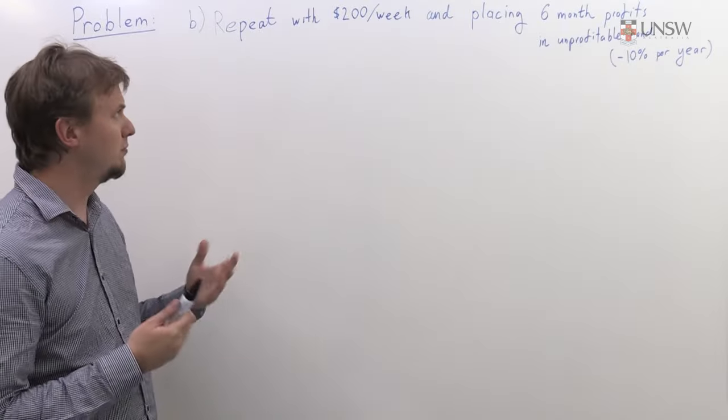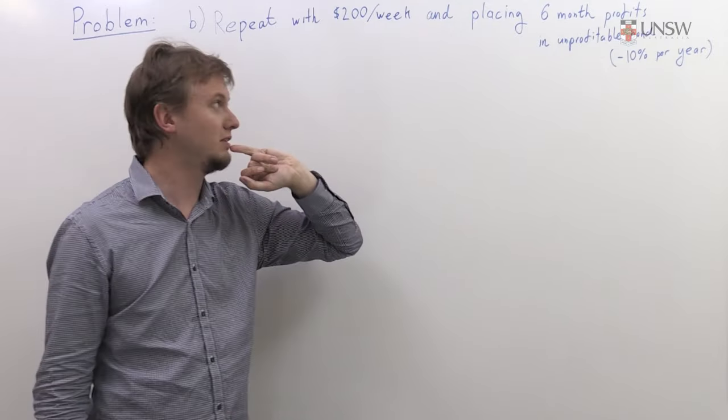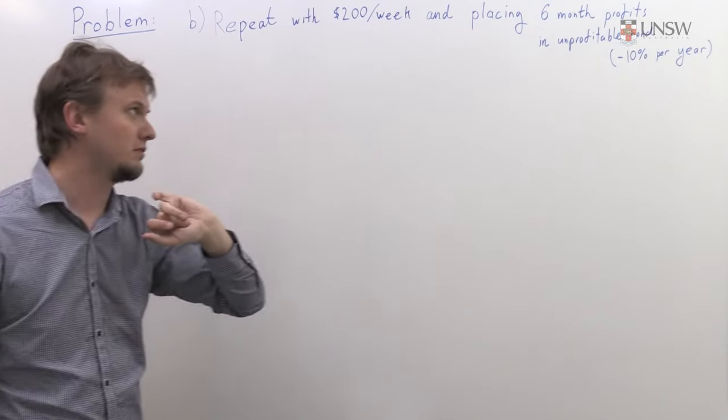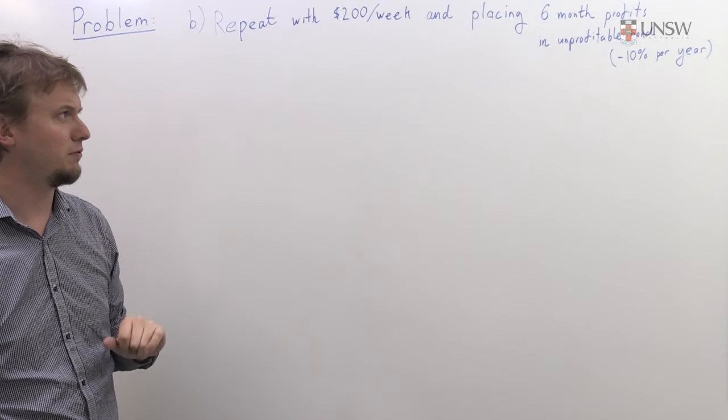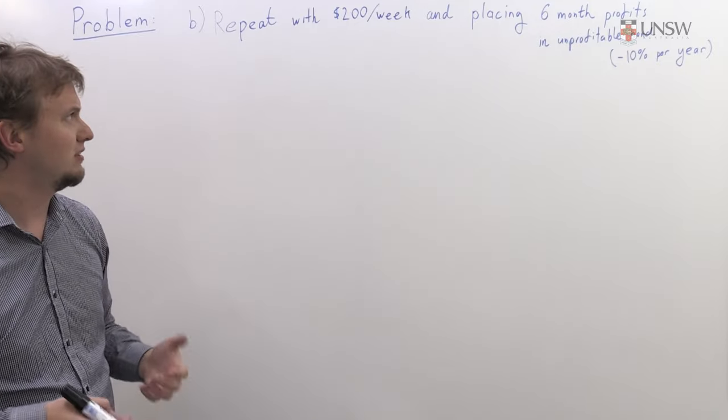To answer part B, we're going to repeat what we did with part A, except now we have this $200 per week expense, and we're also going to take the profits at the six-month mark and put them in that unprofitable bond. The first thing to do is remember that our timescale is years.